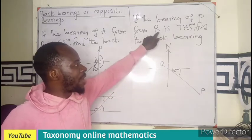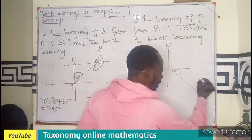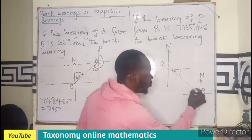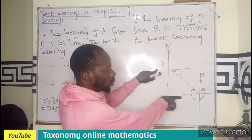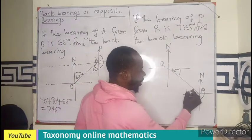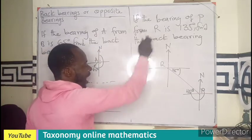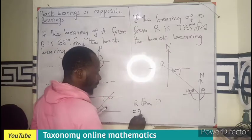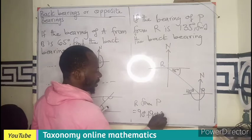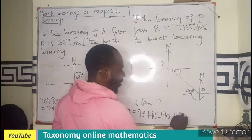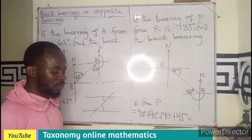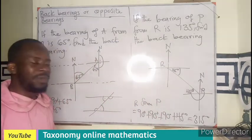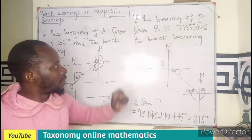Now we find the bearing of R from P. We draw a north line at point P and measure from it. By the alternate angles principle, the 45-degree angle at R is the same 45 degrees at P. Therefore, the bearing of R from P is 90 plus 90 plus 45 degrees, which equals 315 degrees. That is the back bearing.